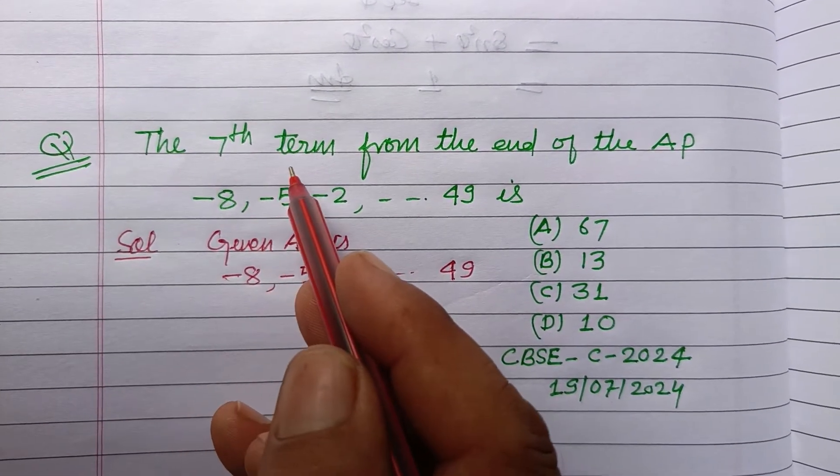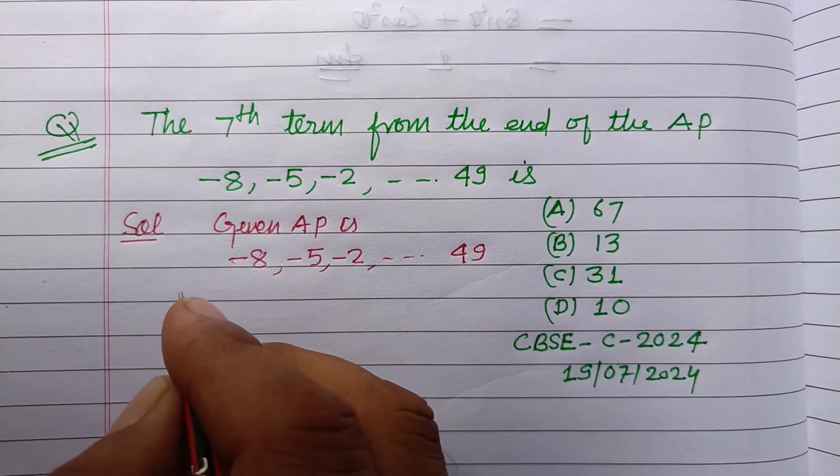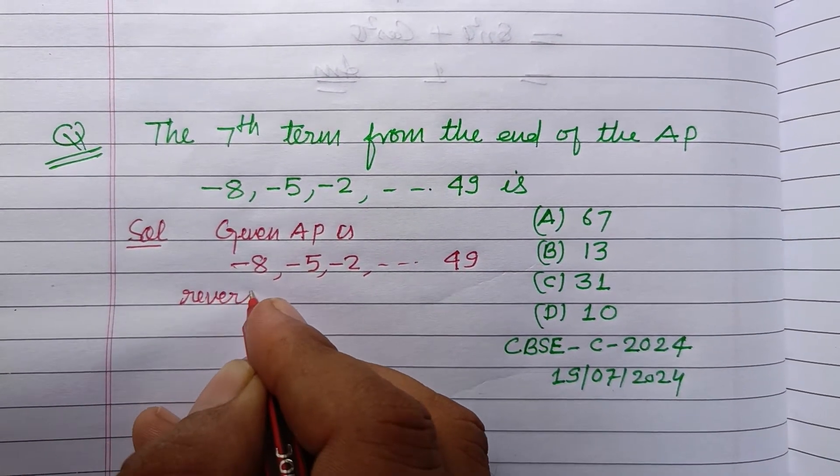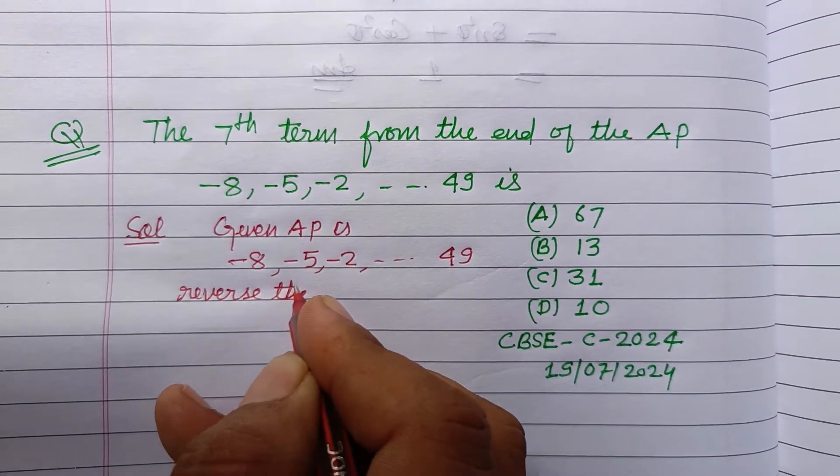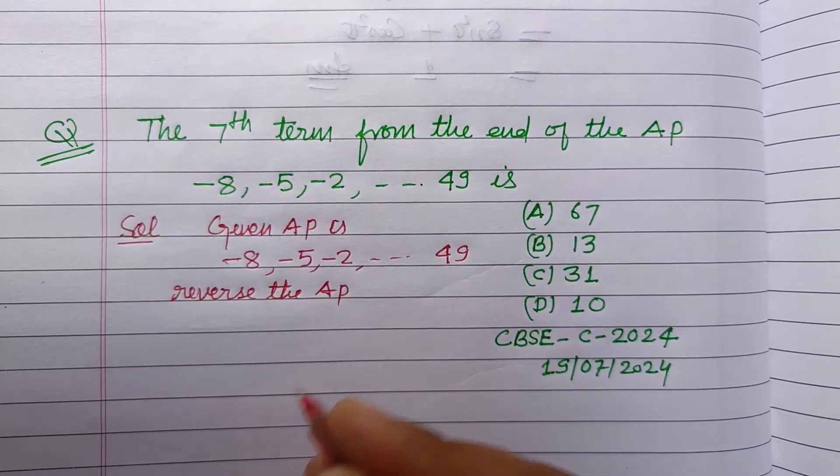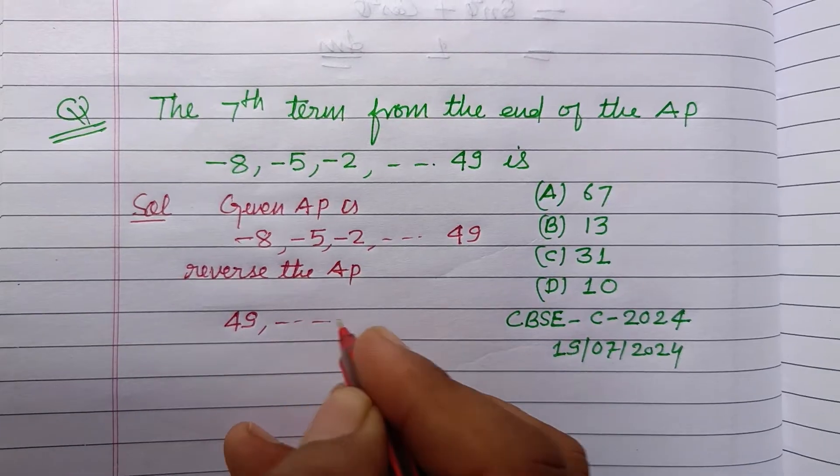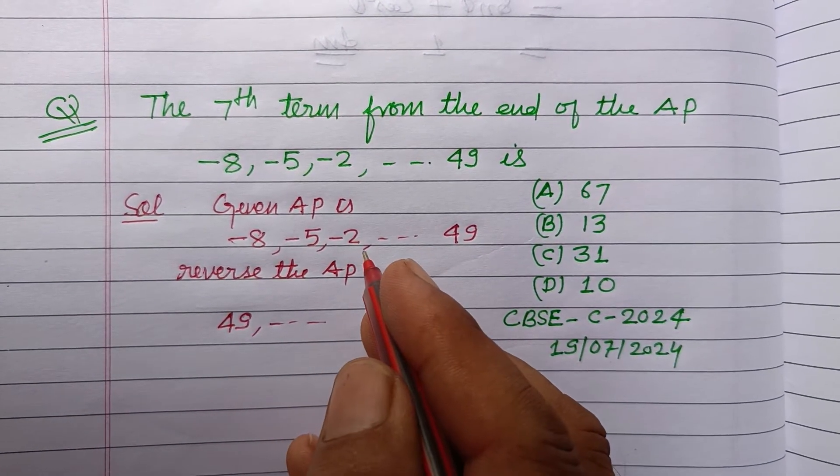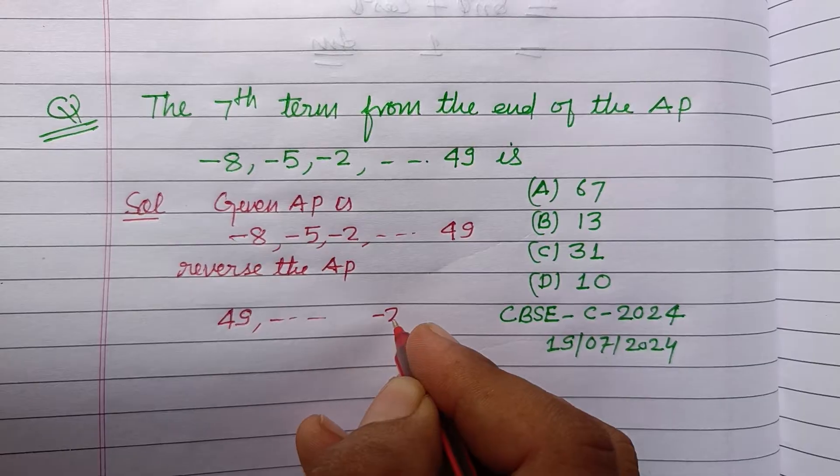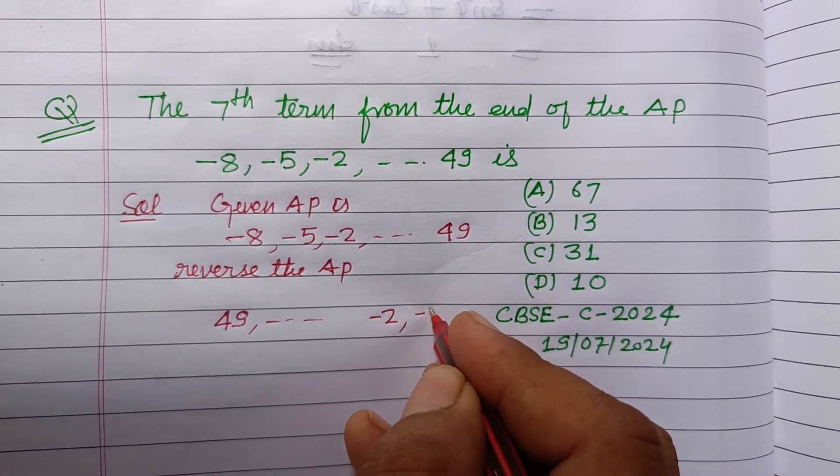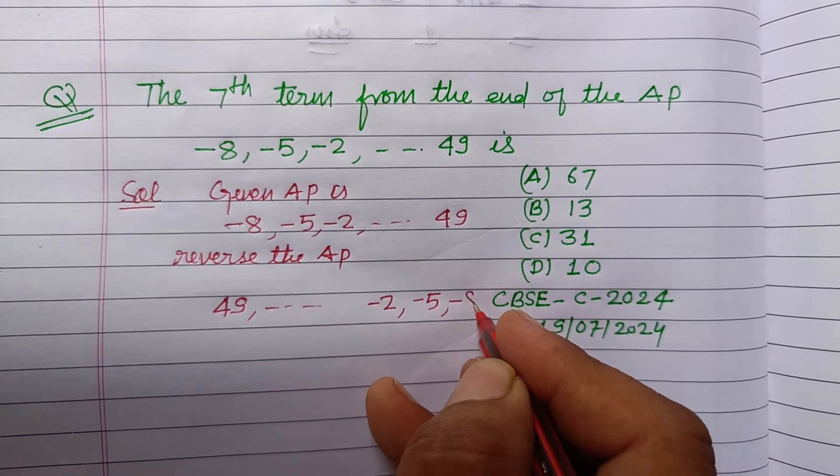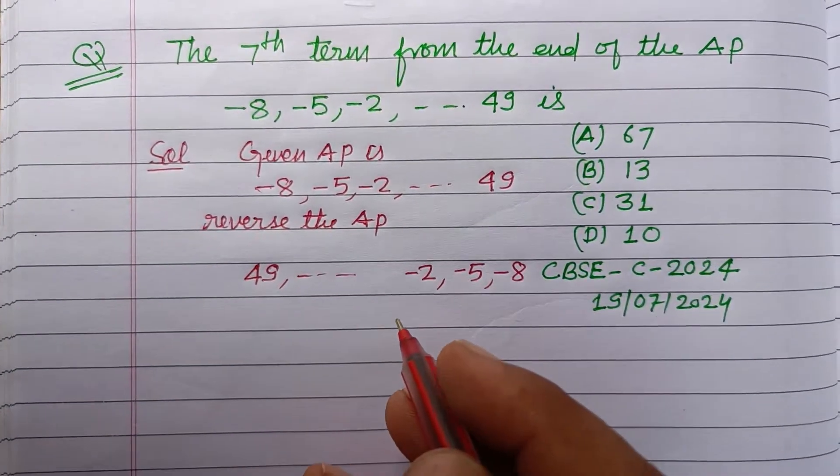Since the question is asking for the 7th term from the end, we reverse the AP to find the 7th term from end. So 49 and so on, this is minus 2, minus 5, minus 8.